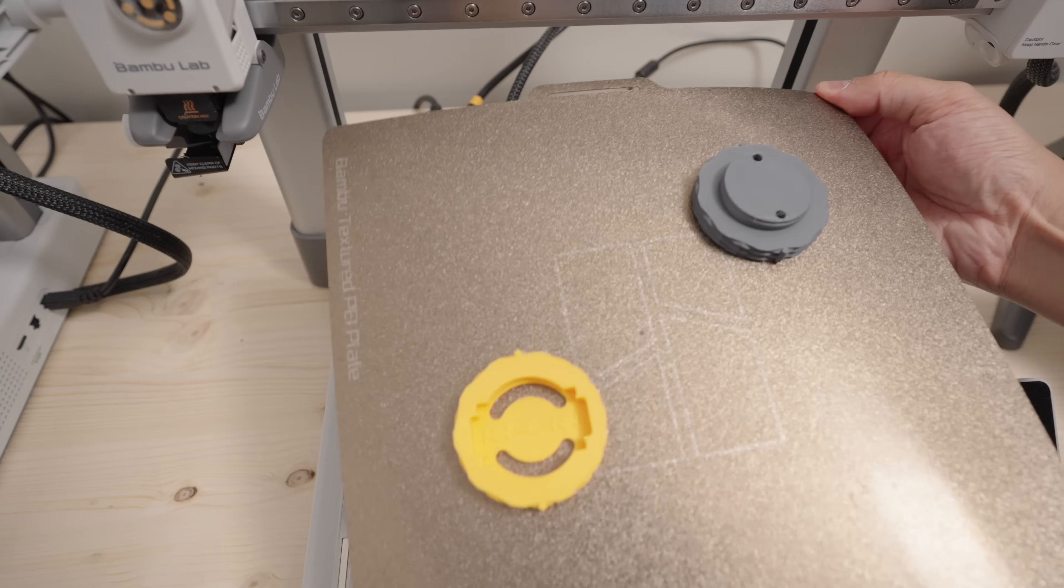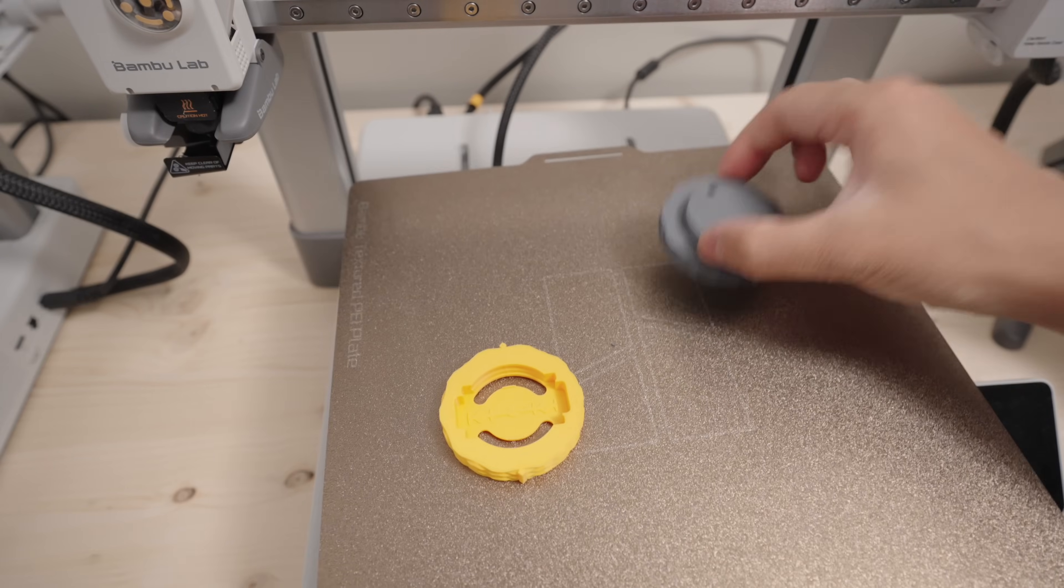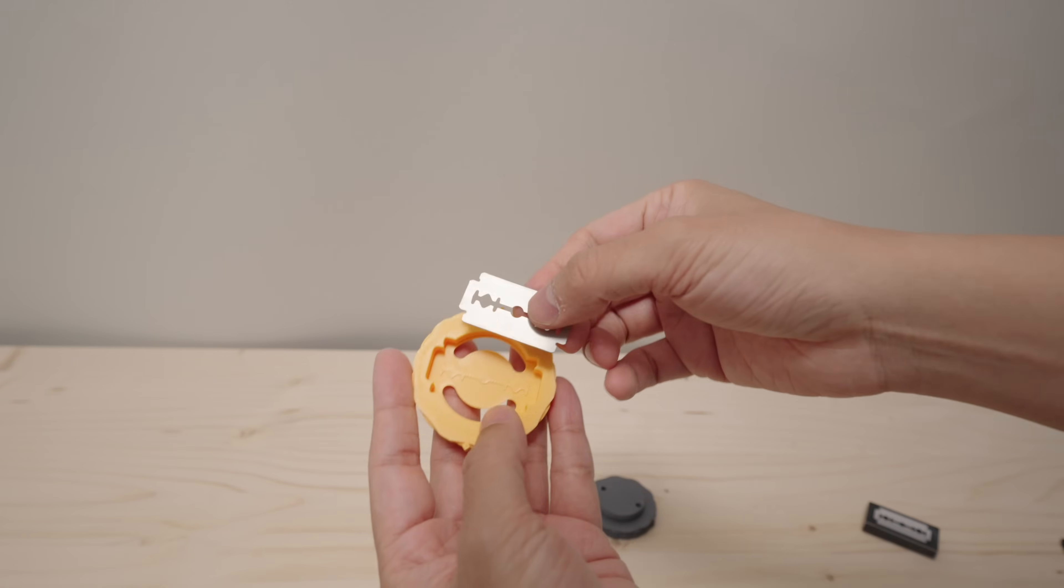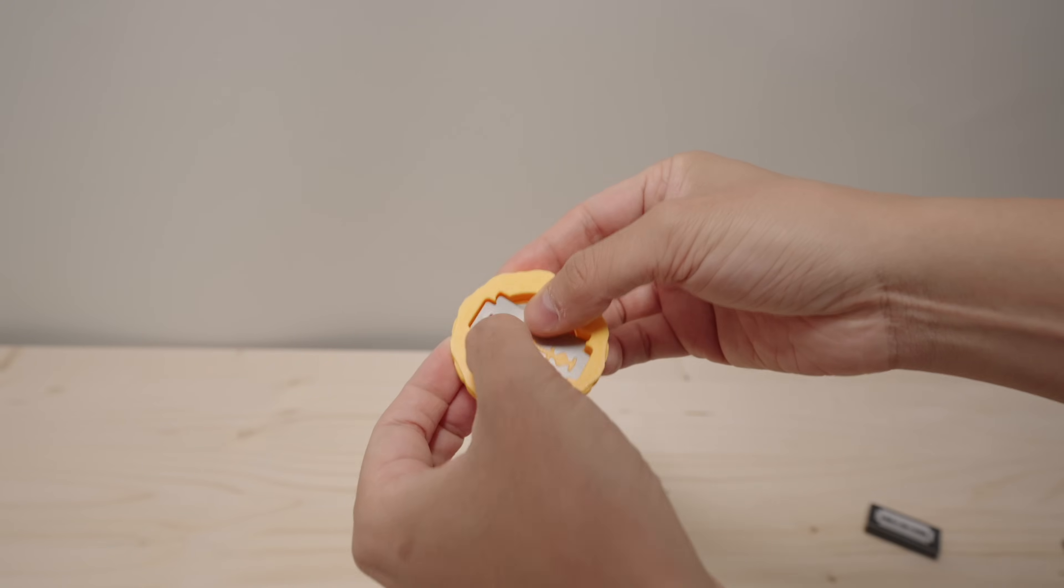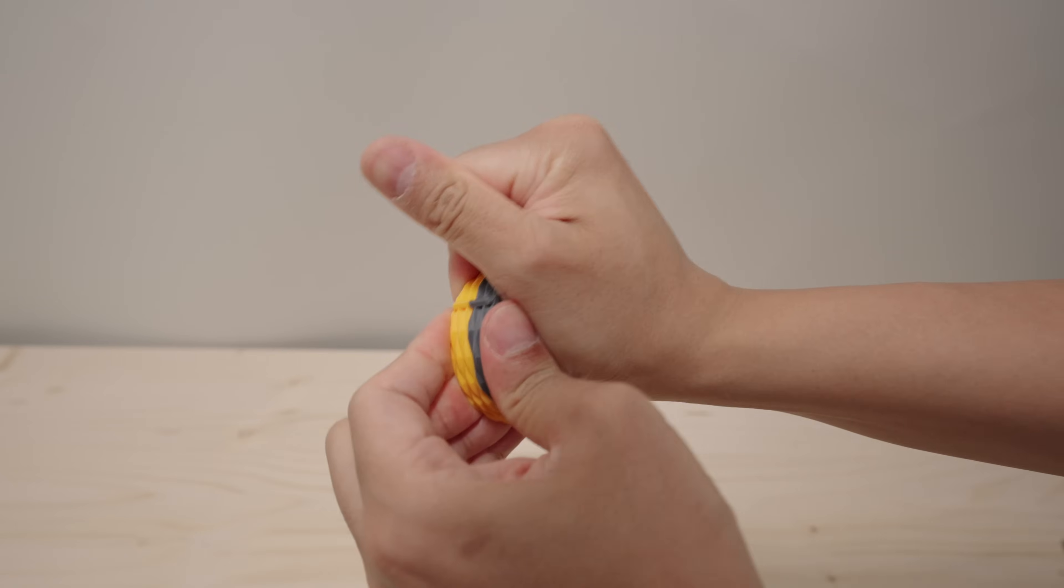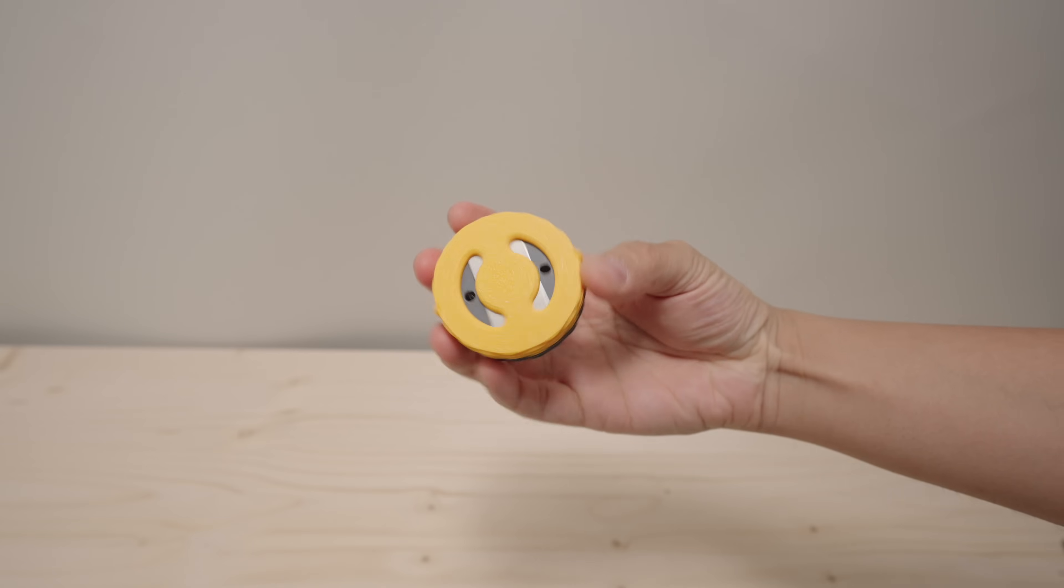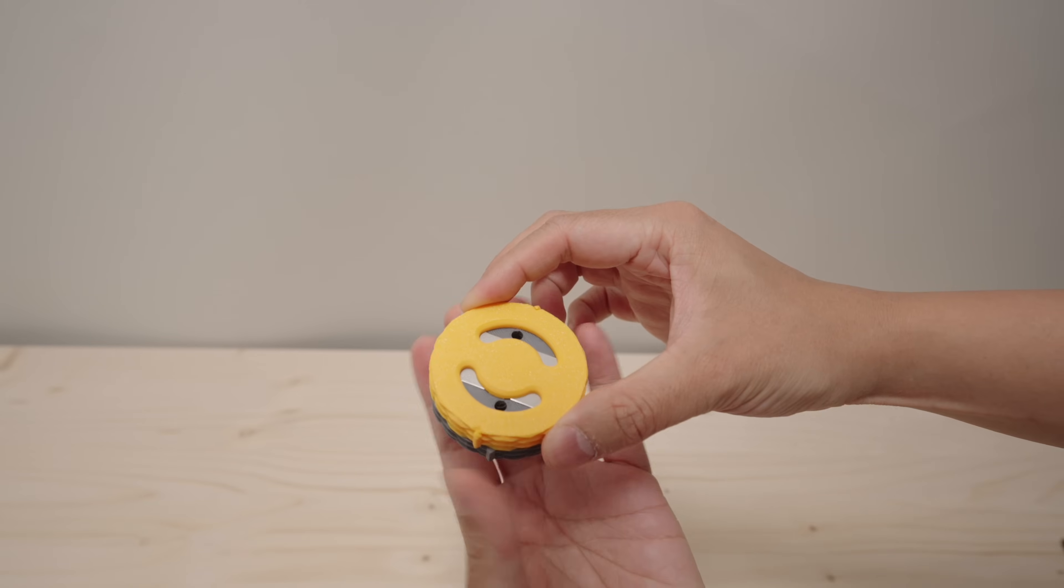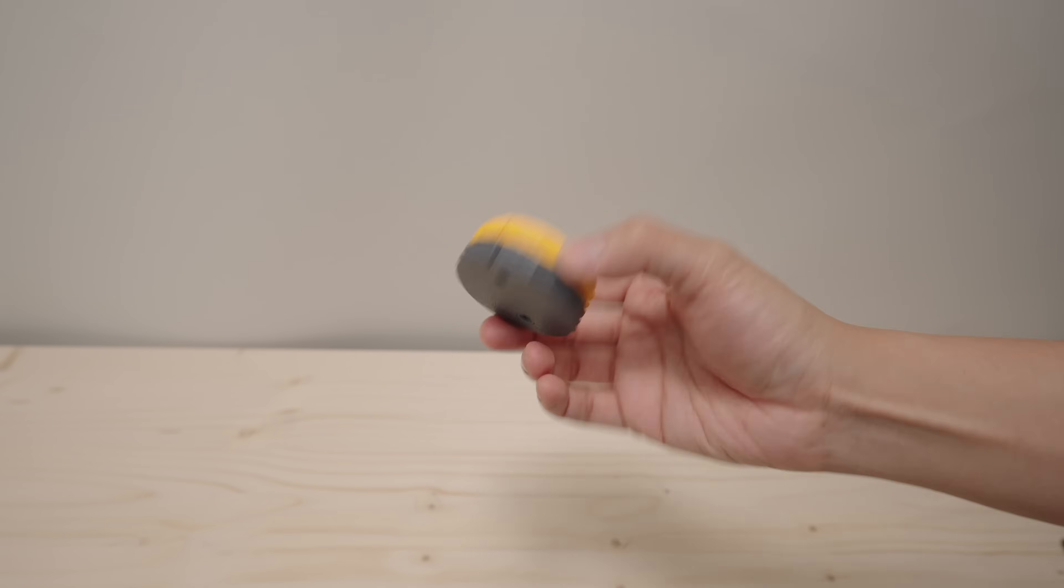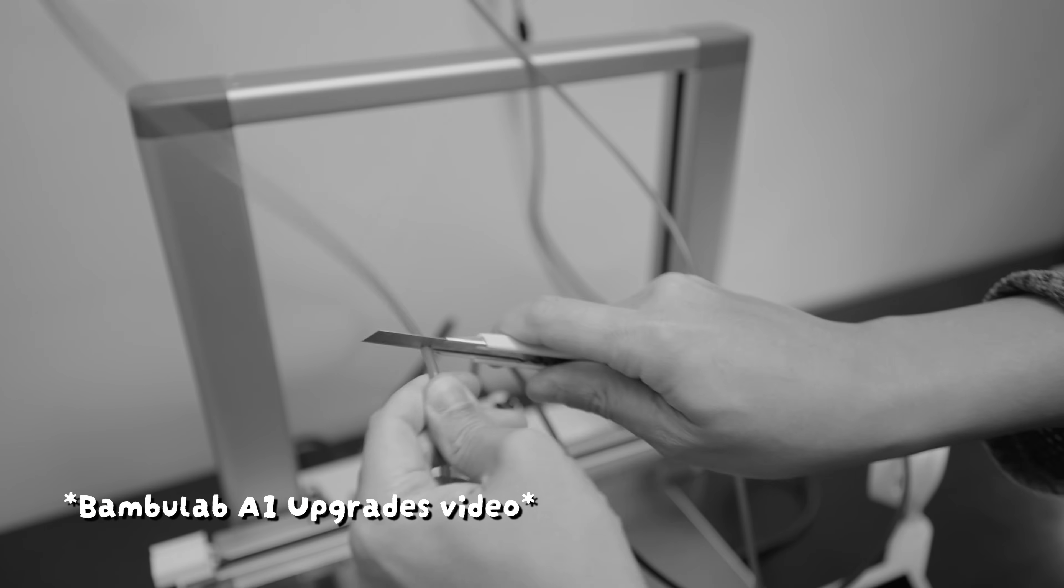I also printed this cool Bowden Puck PTFE tube cutter designed by Bing 3D since we're going to need to cut some PTFE tubes. Just install a razor blade and snap these two parts together. This cutter cuts PTFE tubes like butter, and you don't know how long I have been searching for such a smart and well-designed cutter which works as advertised. Plus it's safe to handle. I mean look at how I used to cut my PTFE tubes.